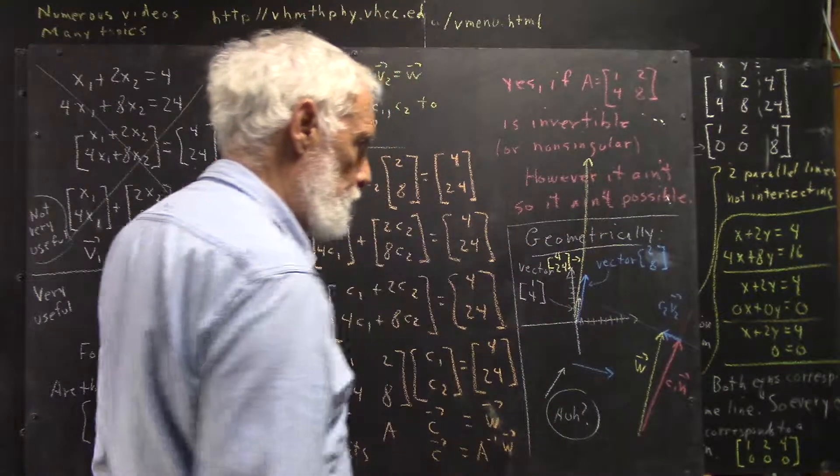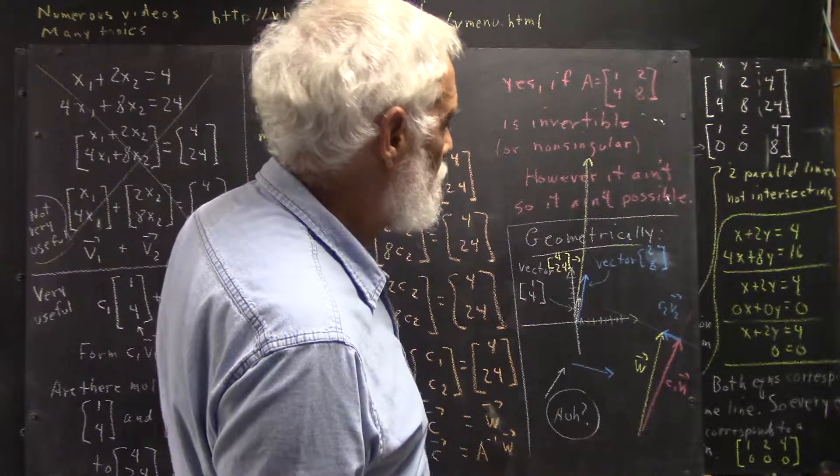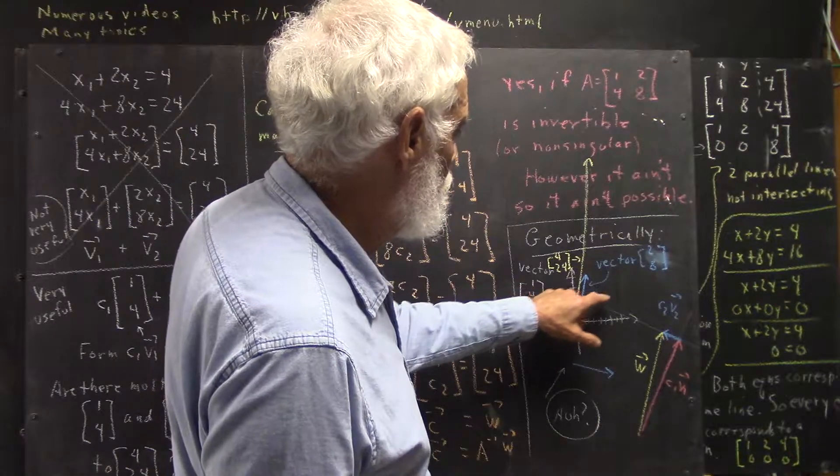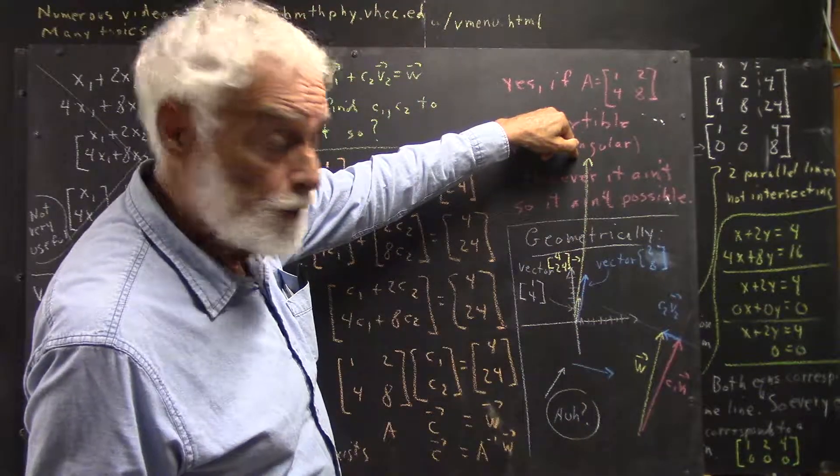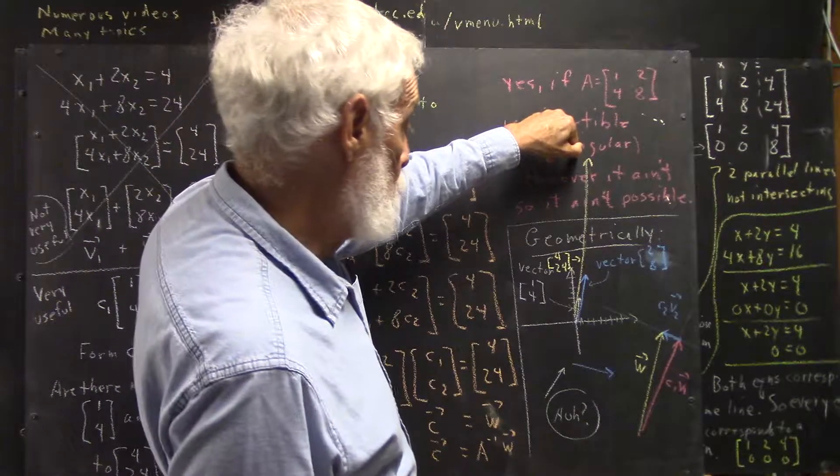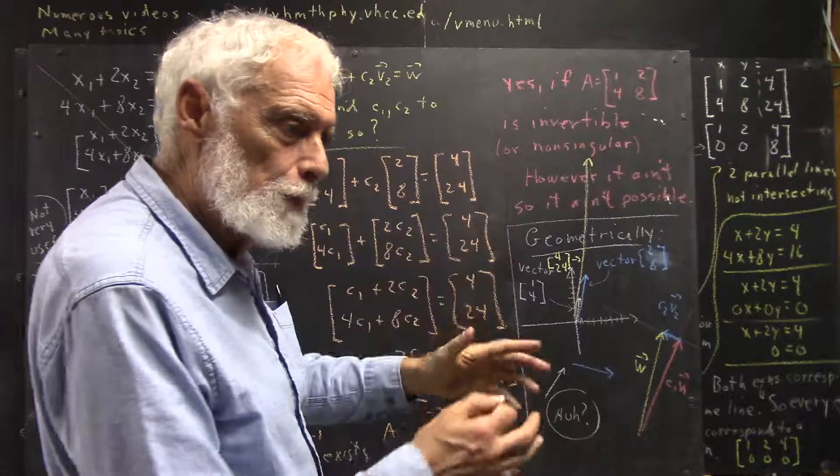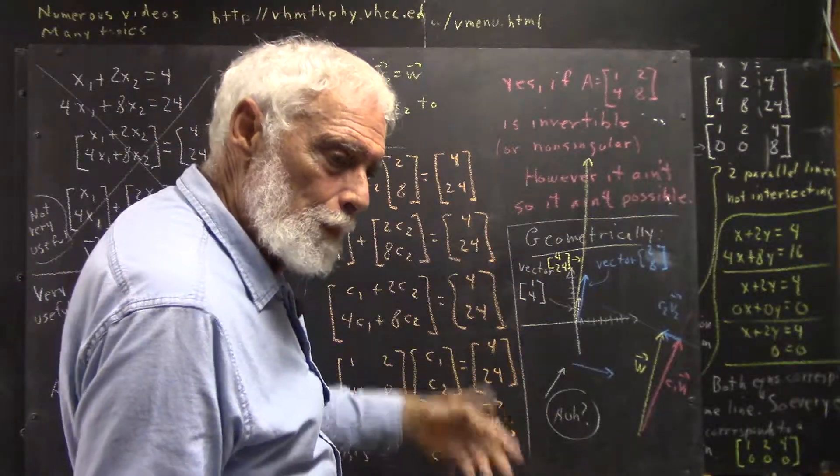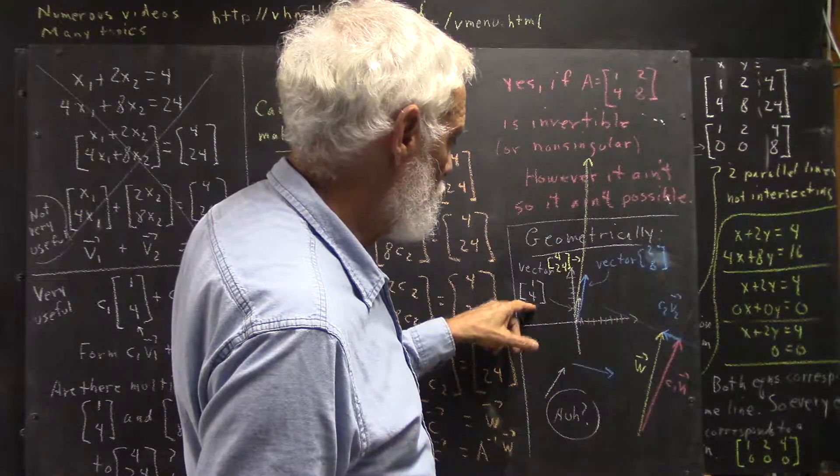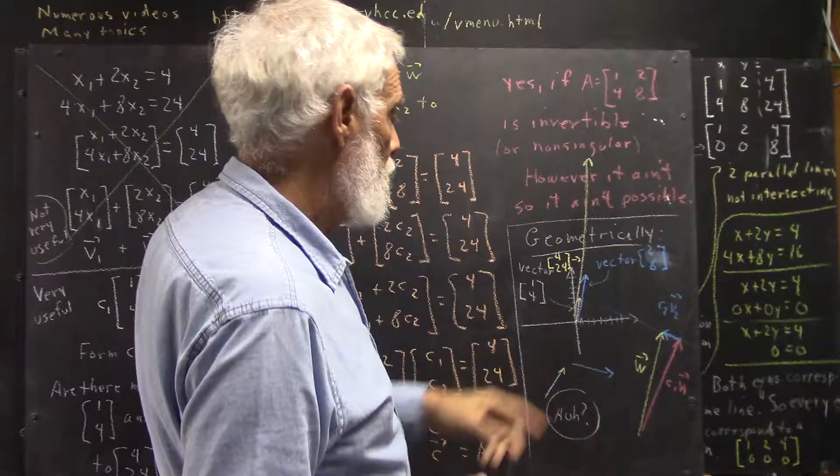Now the question is, can we combine these two vectors or multiples of these two vectors in some way to get this vector? And the answer is no, because any multiple of these two vectors, any sum of multiples of these two vectors, will still have that four to one ratio between the second and the first, or the y component and the x component of the vector.